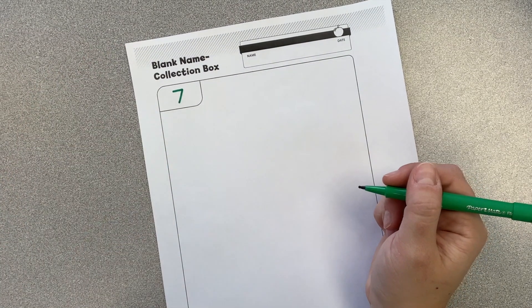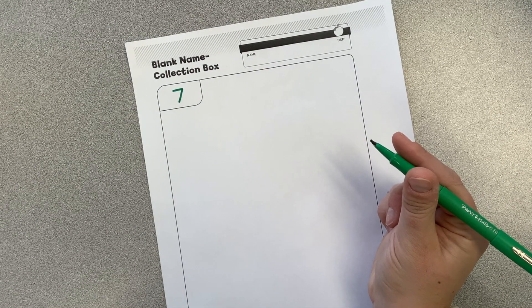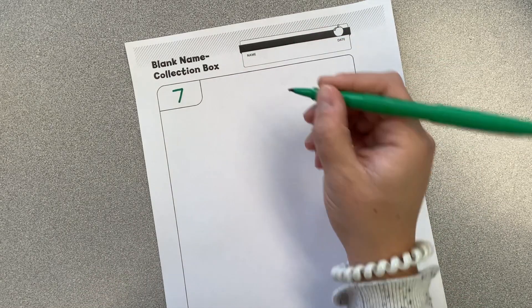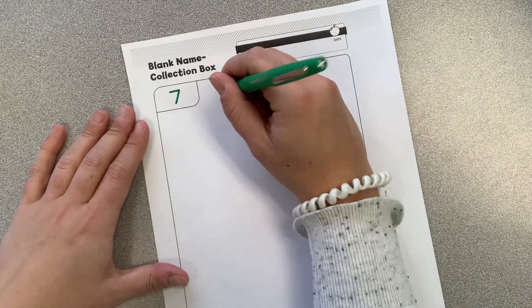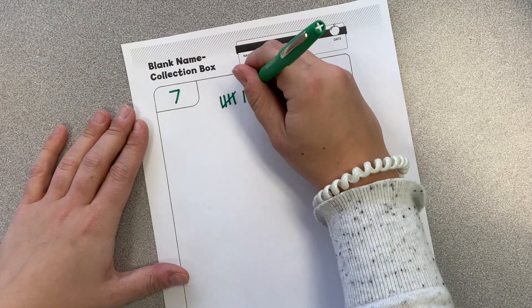And then I'm going to think of all the ways I could write an equivalent name for seven. So something that has the same value. I could make seven tally marks. Five, six, seven.